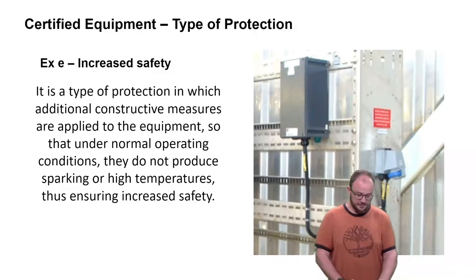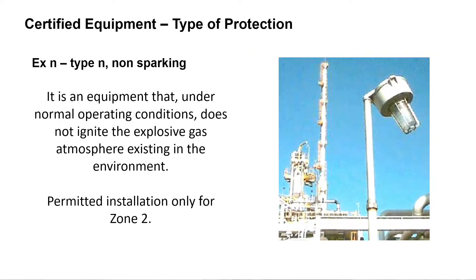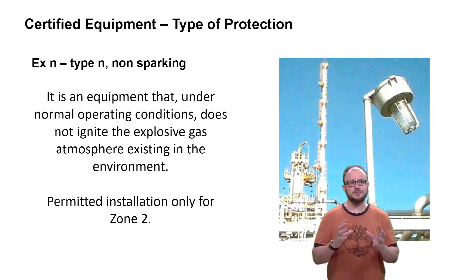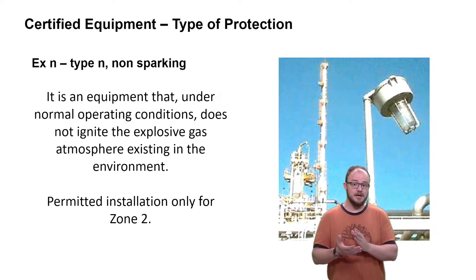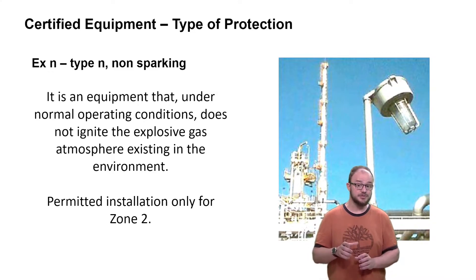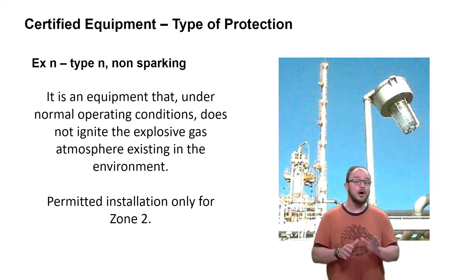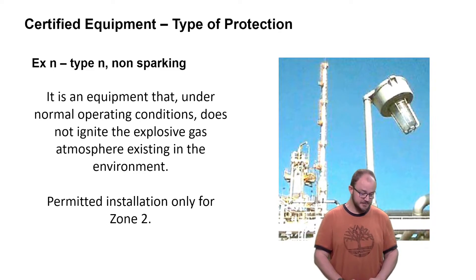We also have Type N — it's non-sparking. It's equipment with construction characteristics that permits installation only in Zone 2. Remember from the first class, we have Zone 0, Zone 1, and Zone 2. Only in Zone 2 can this equipment be installed.